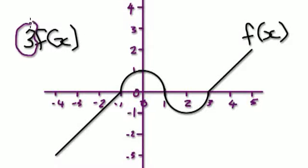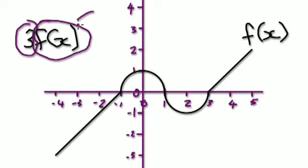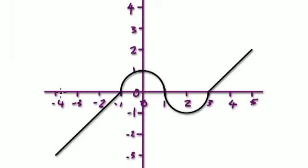So remember, when you have 3, you can imagine that it's a bubble times another bubble here. This bubble here is your original function, and then you times it by 3. Press pause and have a go.